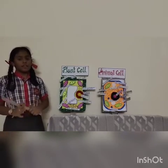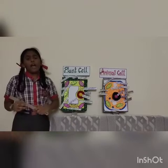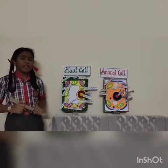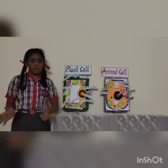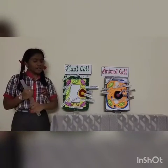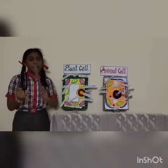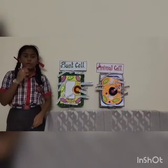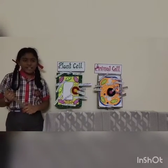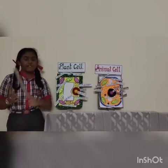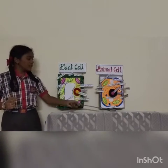First, before discussing about a plant cell and an animal cell, I would like to discuss about a cell. What is a cell? Cell is a basic structural unit of life. As we all know, our body is made up of billions and billions of cells, but we cannot see them with our naked eyes. If we want to see, we need to see through the microscope, which looks like this.